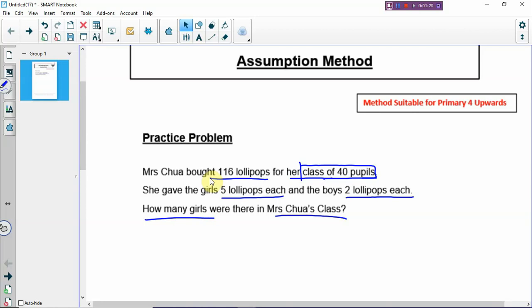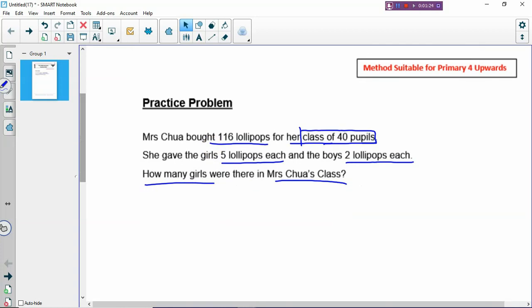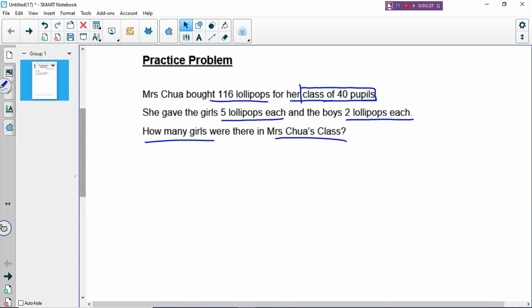For this question, you can use Guess and Check or 3 rows to get the answer. But the most preferred method we will encourage our students to use is Assumption Method because it's faster than Guess and Check and the 3 rows.